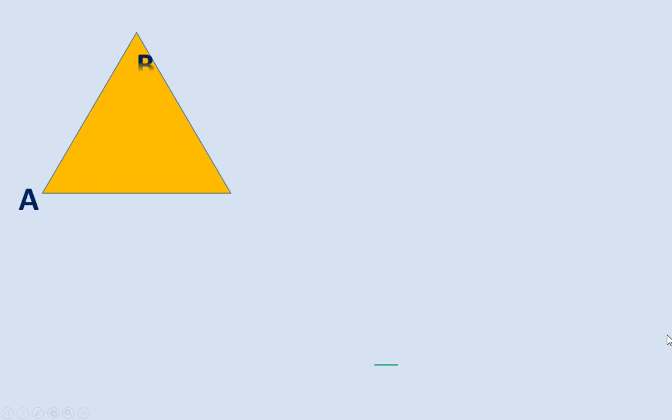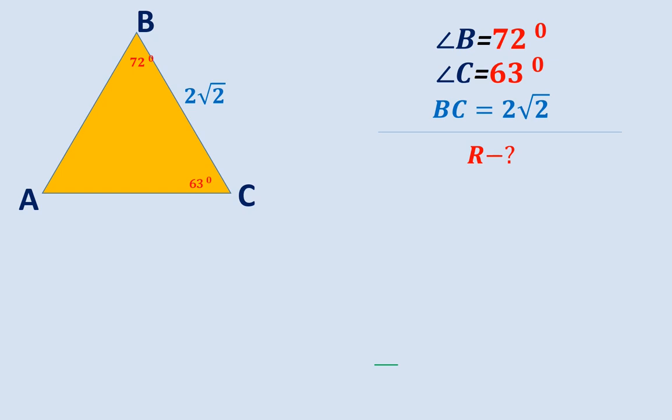In triangle ABC, angle B is equal to 72 degrees, angle C is 63 degrees, BC is equal to 2 times square root of 2. Find the radius of the circle circumscribed around the triangle ABC.